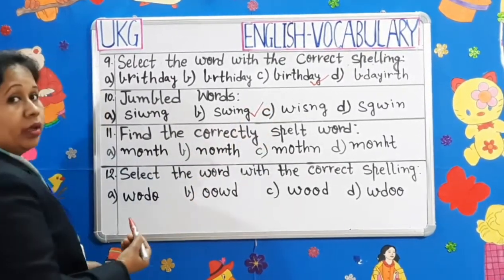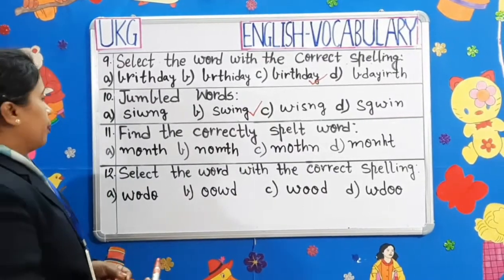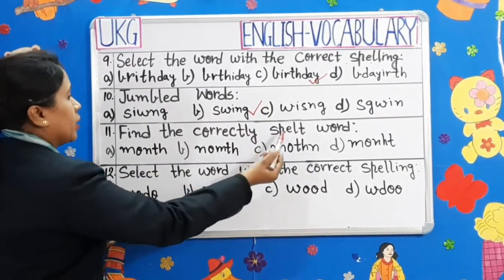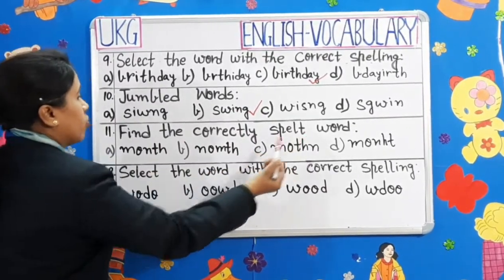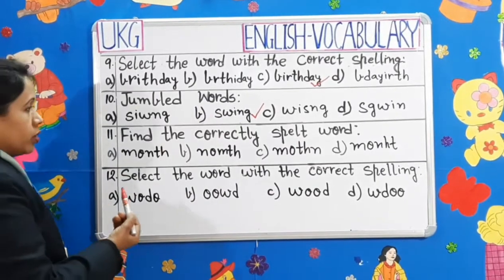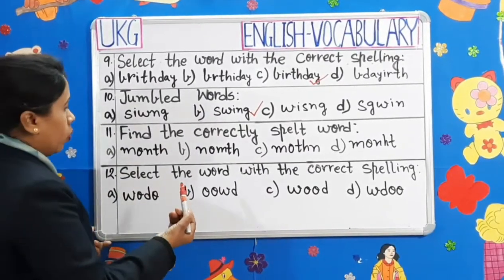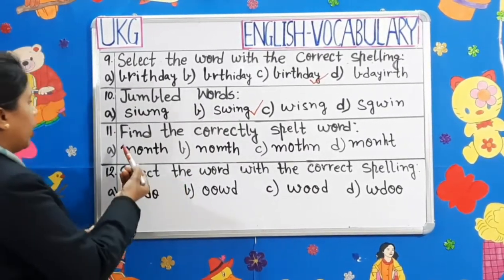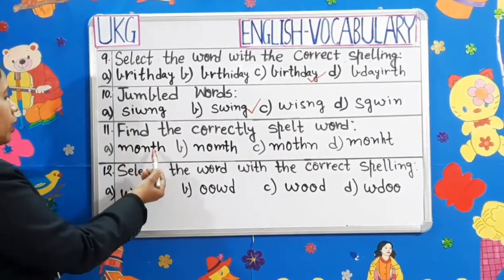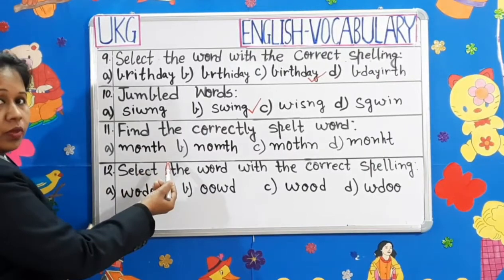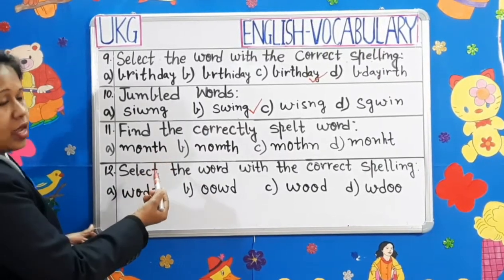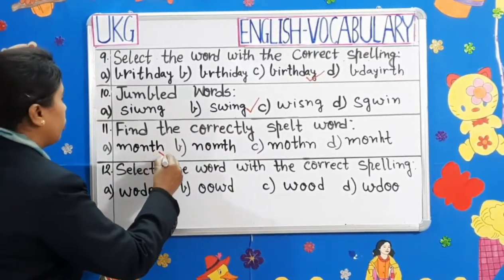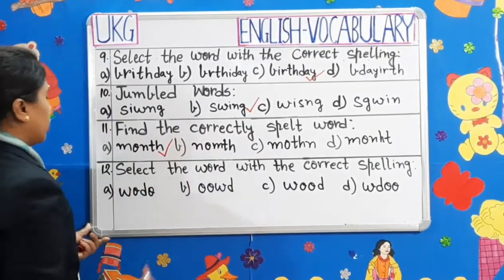Number 11: Find the correctly spelled word. Children, you have to select which word is correct. M-O-N-T-H — yes, it sounds correct. So, we will put a tick on it.